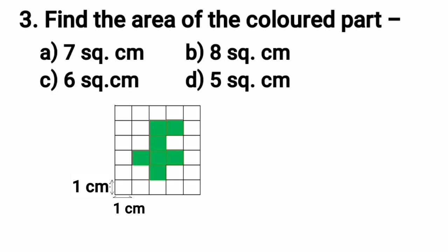Now, here is the third question. Find the area of the colored part. The four options are: Option A is 7 cm, Option B is 8 cm, Option C is 6 cm, and Option D is 5 cm. This is a figure made up of squares and some of them are colored ones. Each square has a side of 1 cm and we have to find the area of the colored part.